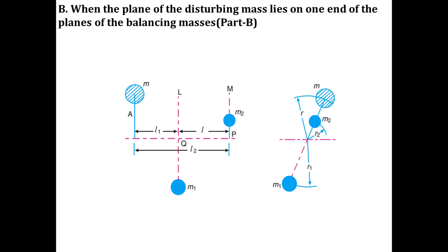Now I am going to focus on Part B. The second possibility of Case 2 is when the plane of the disturbing mass lies on one end of the plane of balancing masses.